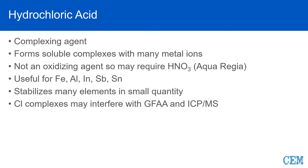Hydrochloric acid is considered a good complexing agent; it forms soluble complexes with many types of metal ions and keeps them in solution. It's not an oxidizing agent, so if there are any carbon materials, you may require nitric acid to form aqua regia. Aqua regia is very good for many different types of metals. It's very useful for iron, aluminum, indium, antimony, and tin, and it will stabilize many elements in small quantities. If you don't have HCl and you were not analyzing right away, some elements may drop out of solution.